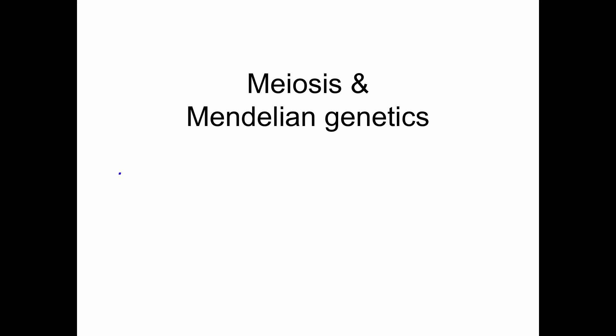The overarching goal — the big picture of meiosis — is to produce gametes, which are sperm and eggs. So we're going to start with that, and then we're going to talk a little bit about Mendelian genetics.